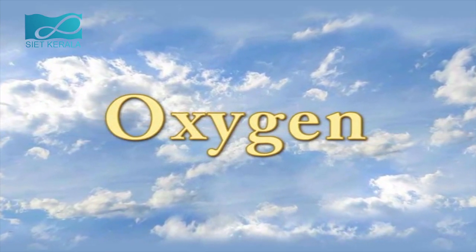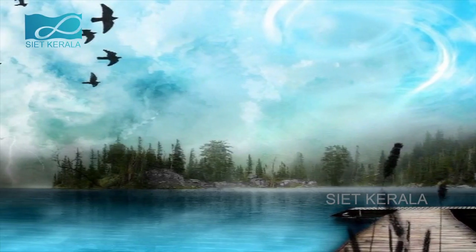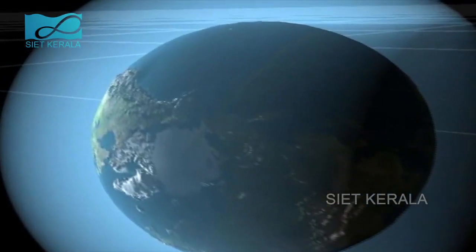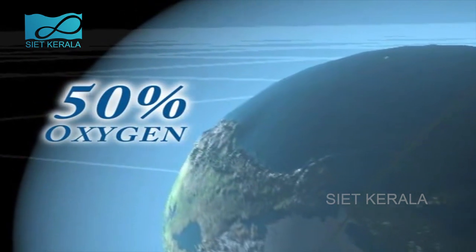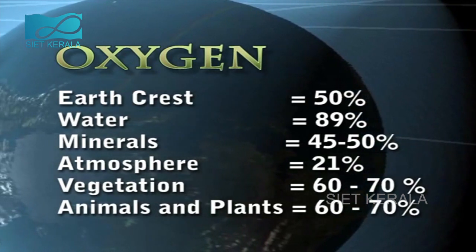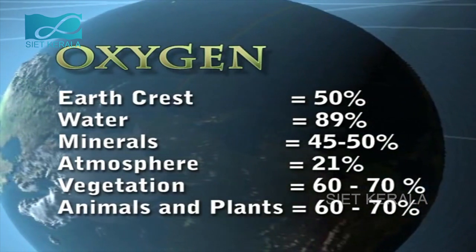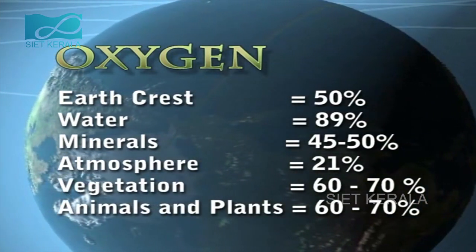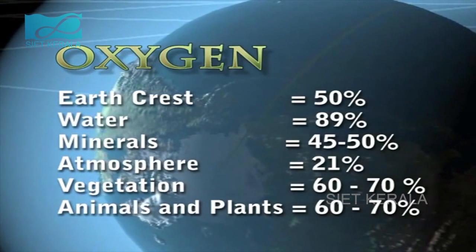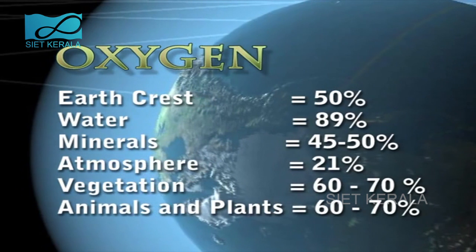Oxygen is diatomic and it is known as breathing air. Oxygen exists in nature in the free state as well as in combined states. Fifty percent of the outer crust of the Earth is oxygen. Looking at the table: oxygen in the Earth's crust is 50%, in water 89%, in minerals 45–50%, in the atmosphere 21%, in vegetation 60–70%, and in animals 60–70%.